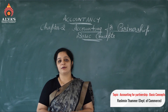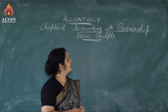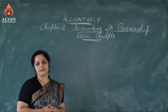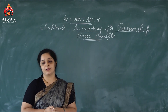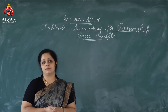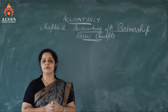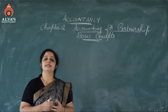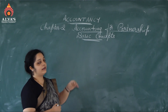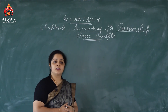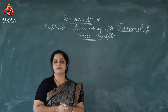Good morning students, welcome to your first class of accountancy of second year PUC. We will be beginning with chapter number 2, that is accounting for partnership basic concepts. Now if you have a glance into the syllabus of second PUC accountancy, we have altogether 11 chapters which are divided into two parts. Part 1 has 5 chapters and the remaining 6 chapters are in part 2. We have started with chapter number 2 because partnership is a concept you are already familiar with from your first year business studies.